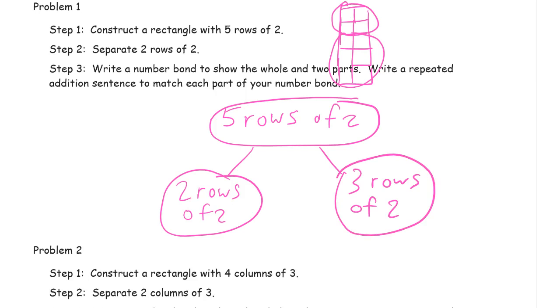And now, repeated addition sentence to match each part of your number bond. So 2 rows of 2 is 2 plus 2, because it's 2 2s, that equals 4. And then the 3 rows of 2 is 3 2s. 2 plus 2 plus 2 equals 6.